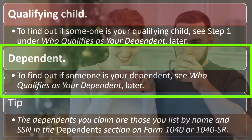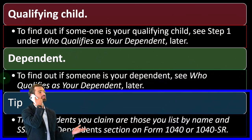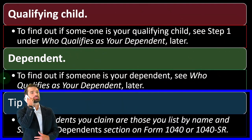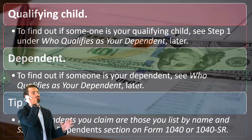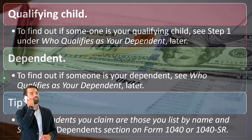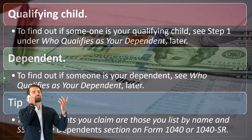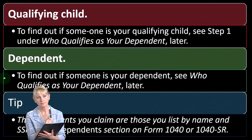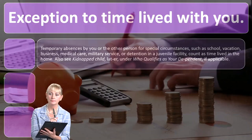To find out if someone is your dependent, you can see 'Who Qualifies as Your Dependent,' which we'll cover shortly. The dependents you claim are those you list by name and Social Security Number (SSN) in the dependents section of Form 1040 or 1040-SR. Dependents are listed on page one of the 1040 and have their own tax implications — for example, you might have a credit related to the dependent, and they can also have impacts on filing statuses.